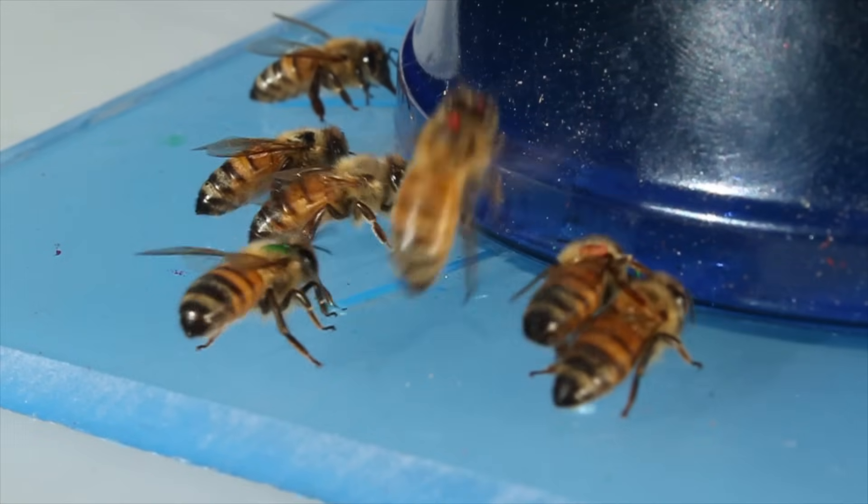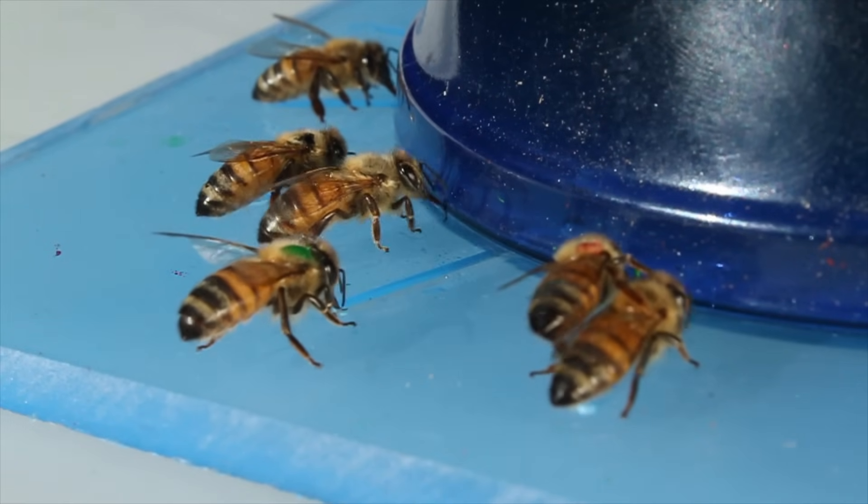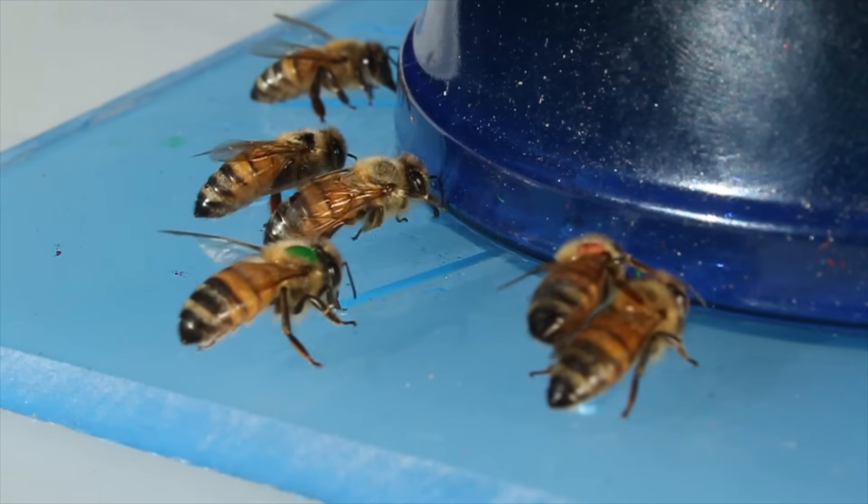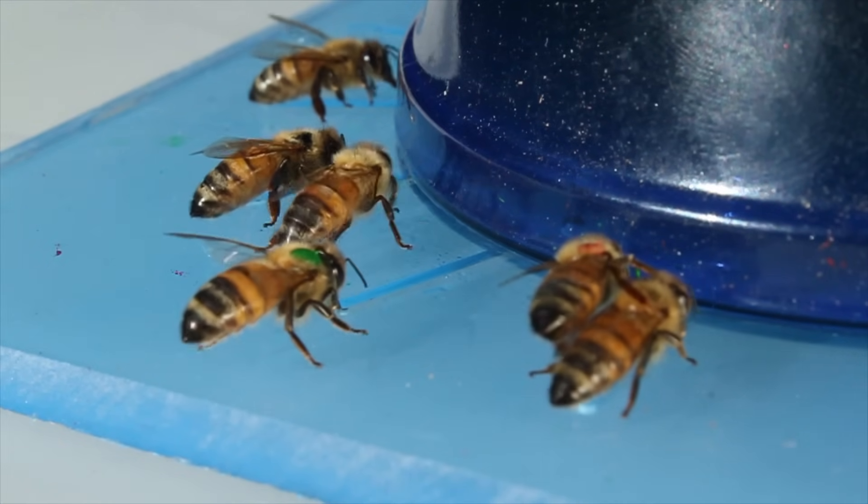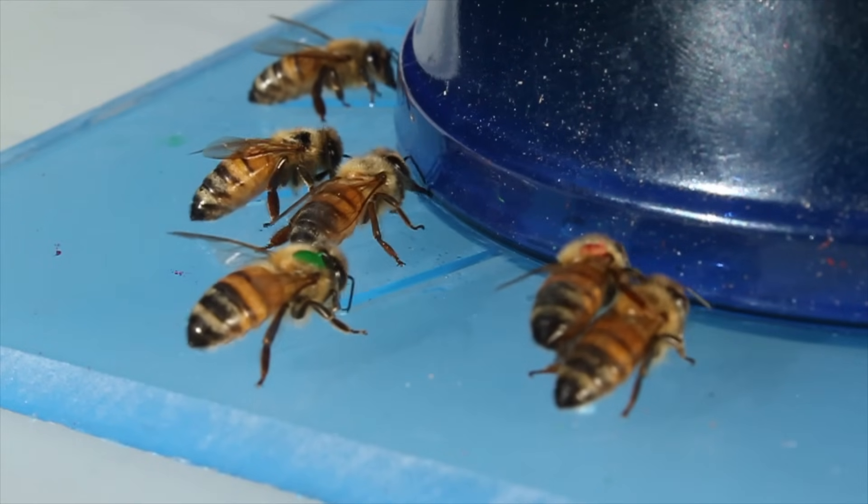How could these bees, who held no previous knowledge of this site, suddenly know precisely where the feeder was located? Is it possible that the animals communicate amongst themselves?